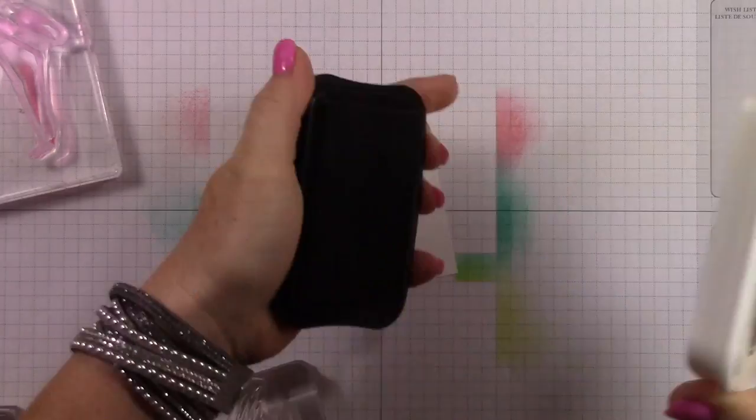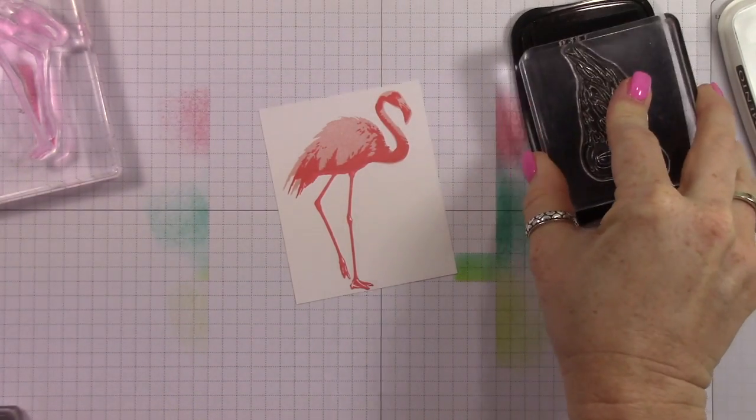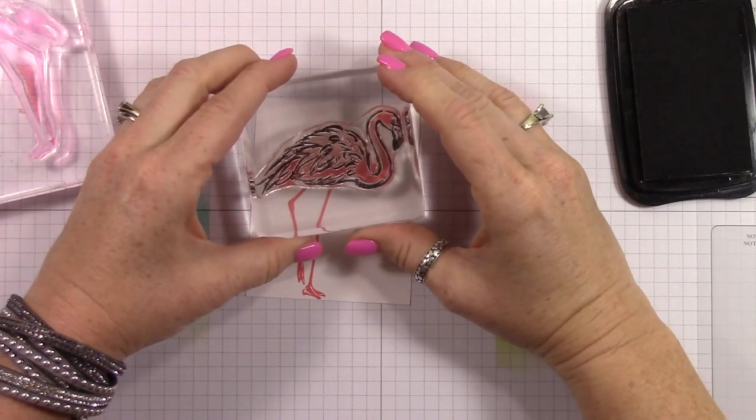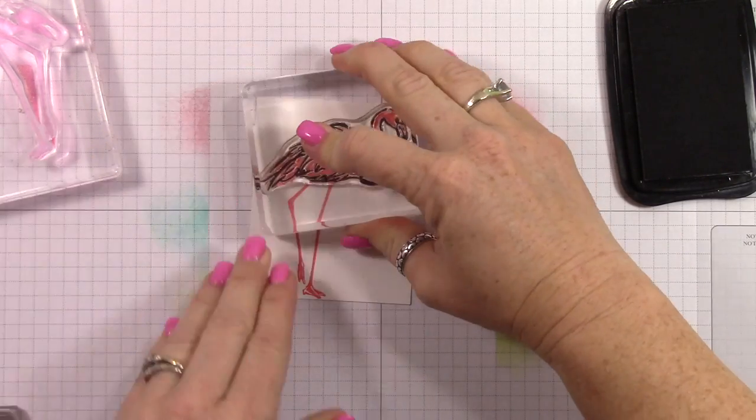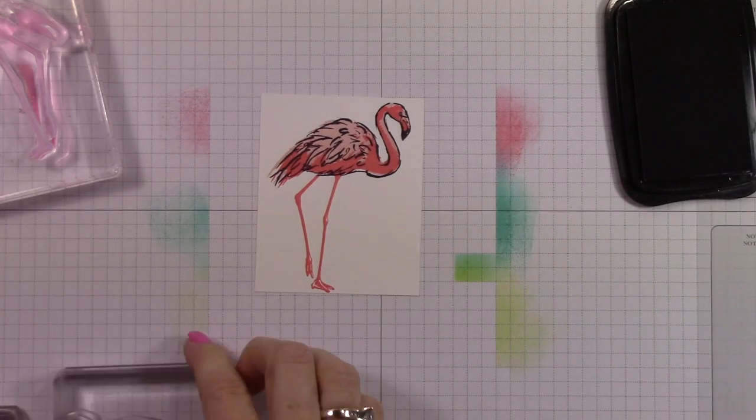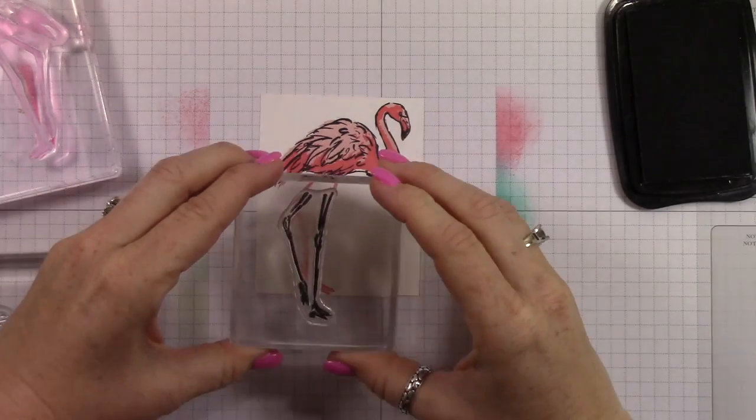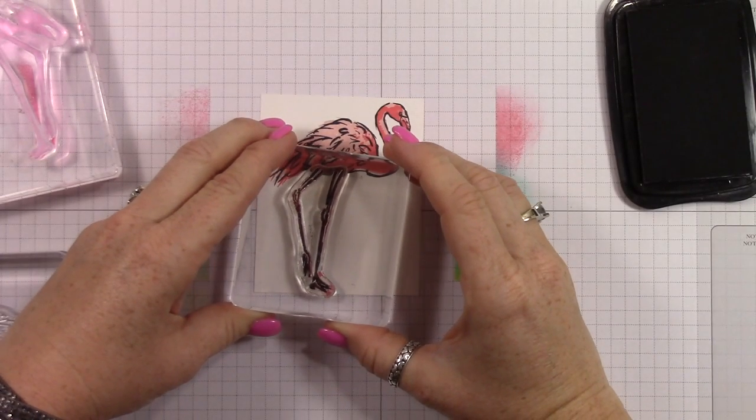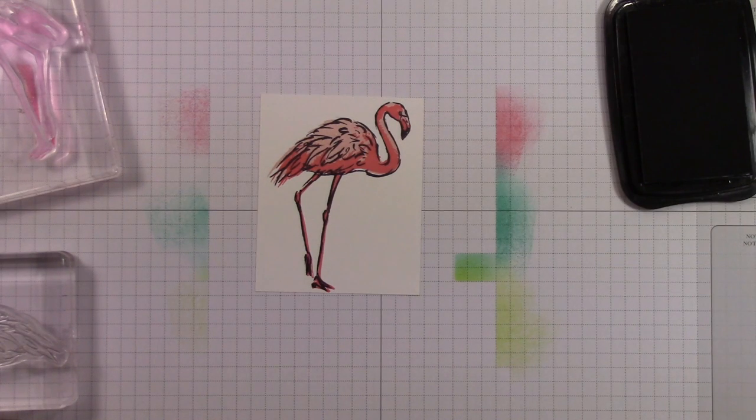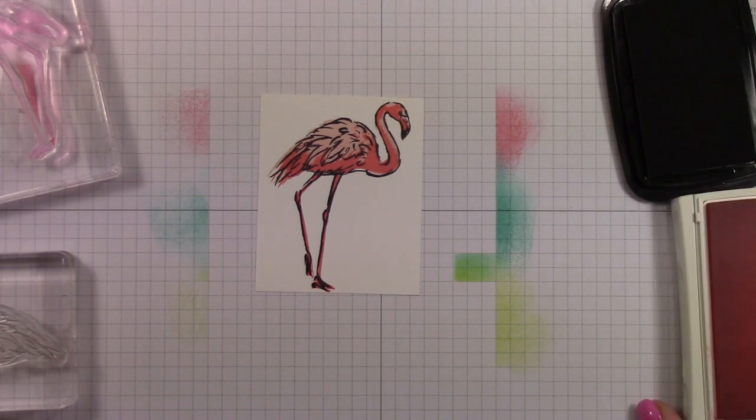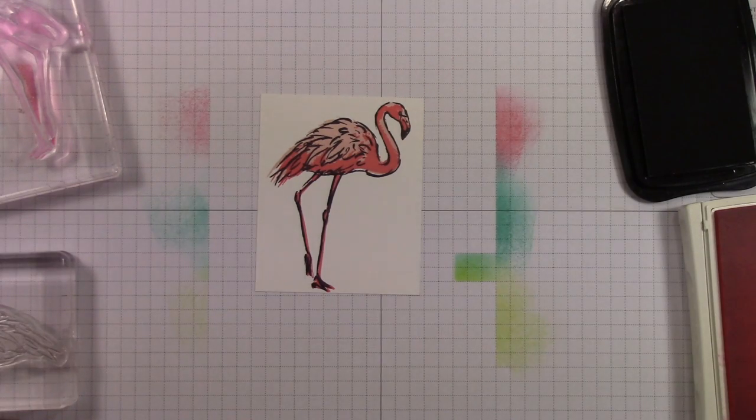The last step is going to be to add the black. Now you could go with even a darker pink if you wanted to, but I found that the black on top of the pink really makes the flamingo pop and just adds what I feel like is the necessary definition to finish off the flamingo. Plus his little beak at the very end is black, so it just provides the ability to add that black piece. I just really like it stamped with the memento tuxedo black.